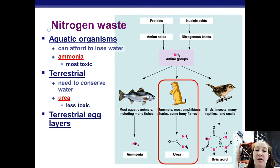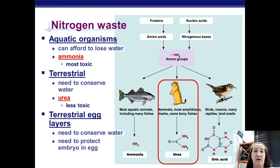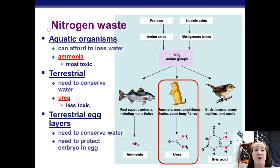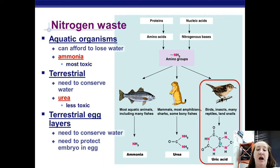Terrestrial egg layers need to conserve water, but they also have to protect the embryo inside their eggs. Birds and reptiles lay their young in a hard-shelled egg — there is no exchange with the environment. As the embryo grows, it's producing nitrogenous waste that has to stay inside the egg. So they convert their ammonia into something really, really non-toxic called uric acid.